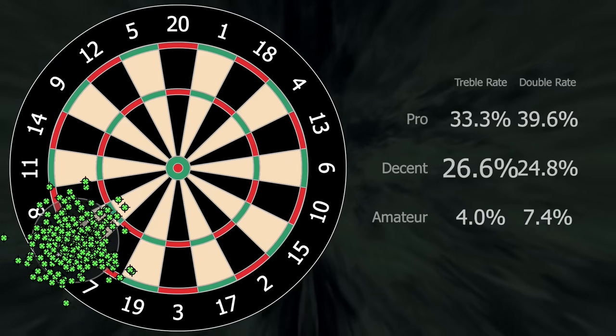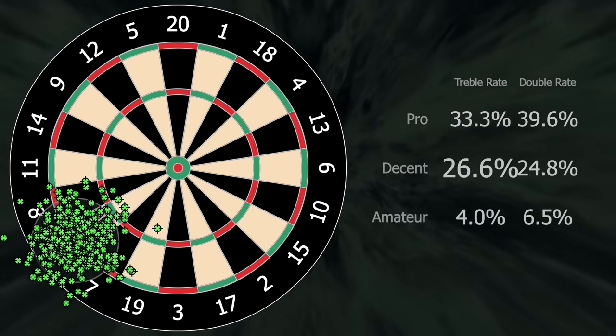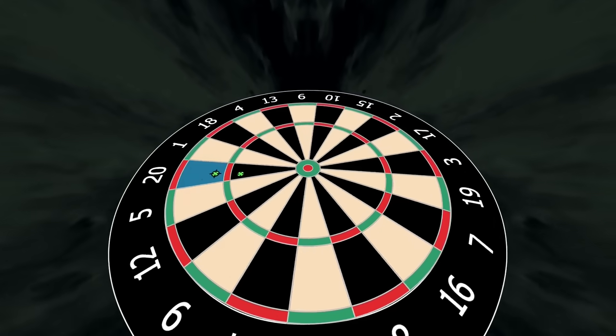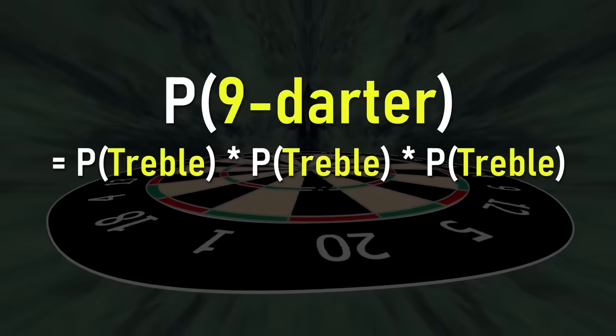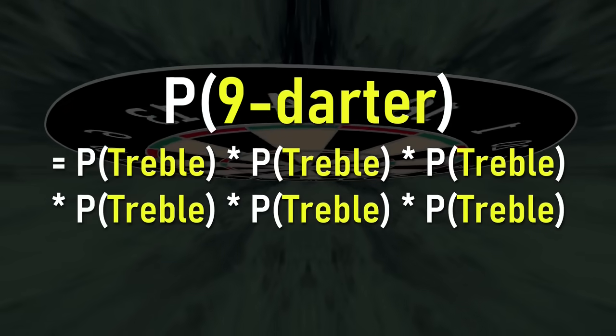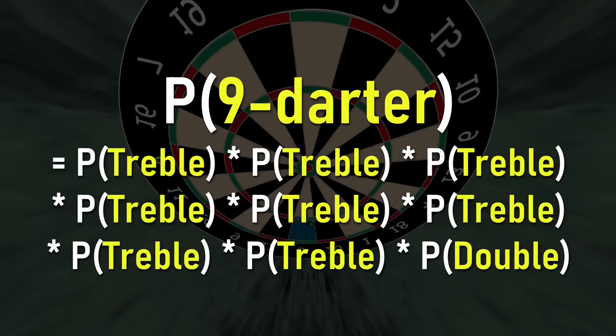So as the double segment is bigger, obviously the hit rate is going to be a little bit higher. So that's 38%, 27%, and 7%. So the chance of a player hitting a nine dart is equal to the chance of them hitting three trebles, then another three trebles, and then two trebles, and then one double.